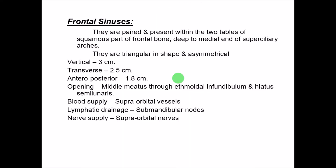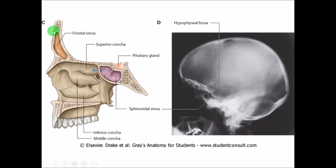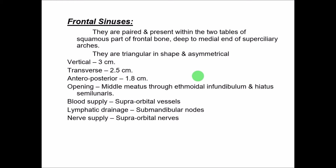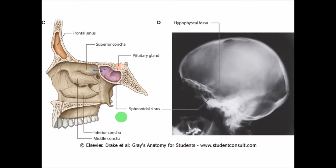The frontal sinus is present between the two tables of the squamous part of the frontal bone, with a size of approximately 3 cm x 2.5 cm x 1.8 cm. It opens into the middle meatus through the ethmoidal infundibulum and the hiatus semilunaris. Blood supply is by the supraorbital vessels, lymphatic drainage into the submandibular group of lymph nodes, and nerve supply by the supraorbital nerves.